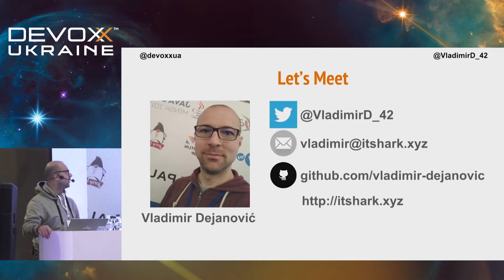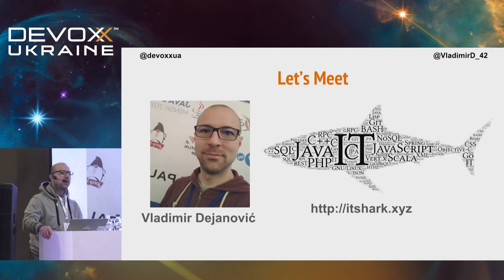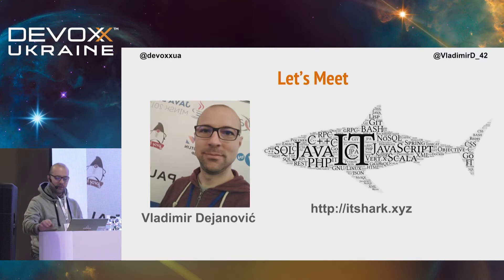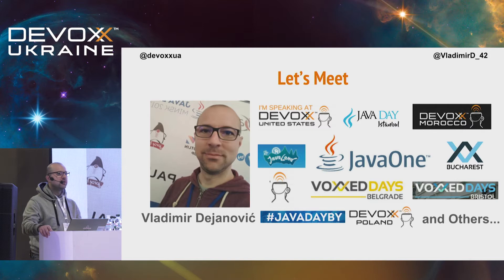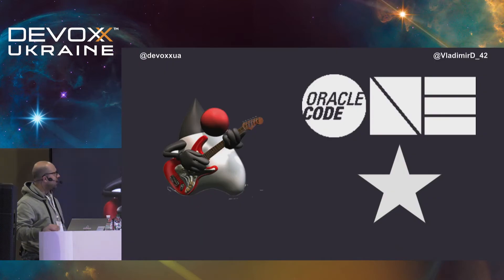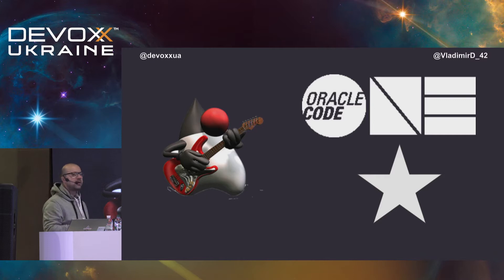Let me introduce myself. My name is Vladimir Dejanovic. This is my Twitter, email, blog, and GitHub if you want to contact me online. I've been part of the IT scene since 2006 — in other words, I've been getting paid for the work I do since 2006. During those years I did development in all kinds of programming languages, worked on all kinds of projects and methodologies. I'm a founder and leader of the Amsterdam Java User Group, and I give talks at conferences. Since recently I'm a Java One rock star — one of my talks at Java One got the highest rating, though they renamed it to Oracle Code One, so I guess I'm an Oracle Code One star.